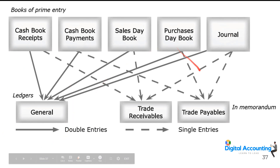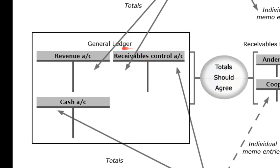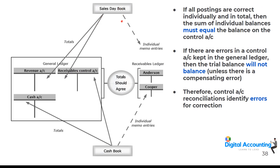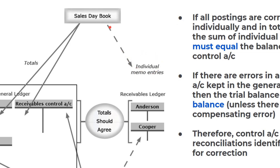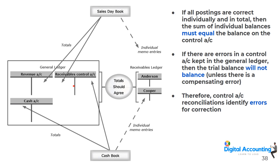The first place transactions are recorded is the books of prime entry — cash receipts book, cash payments book, sales day book, purchase day book, and journal. When a sale is made, it is recorded as a credit to the revenue account and a debit to the receivables control account. Individual customer entries go to the subsidiary ledger as single entries only. Errors can arise if entries are missed in either the control account or the subsidiary ledger, affecting the financial statements.